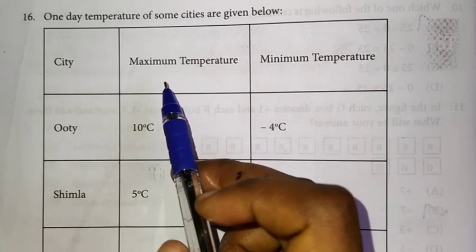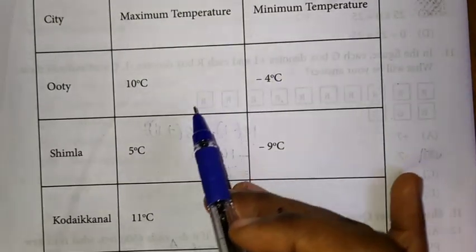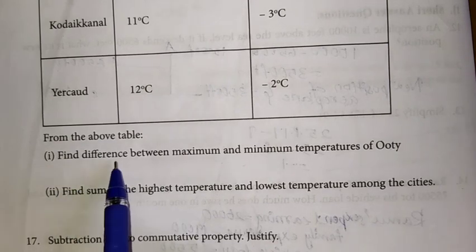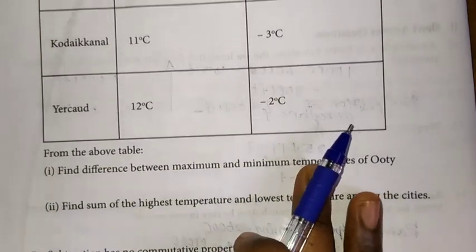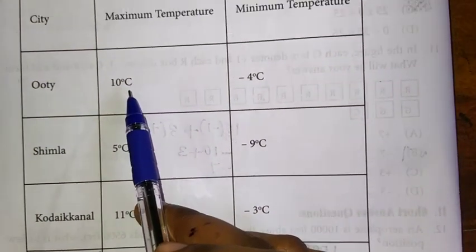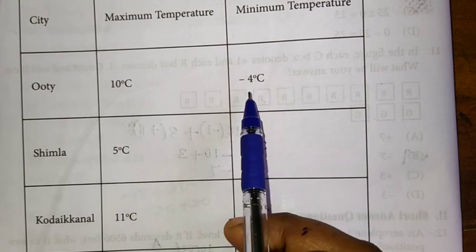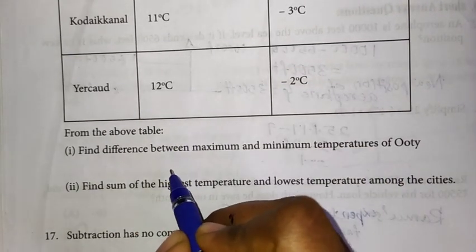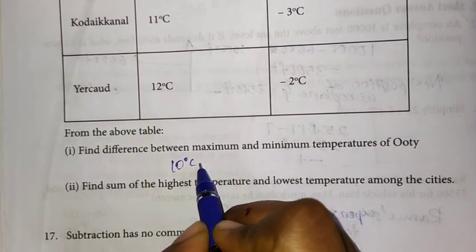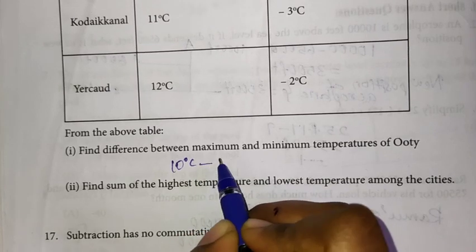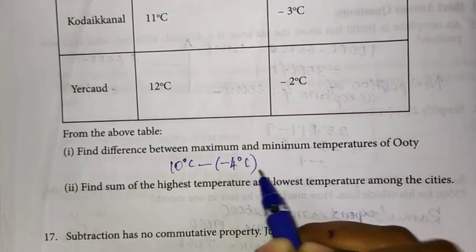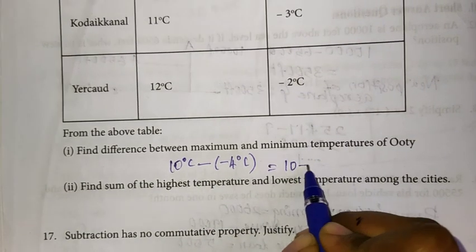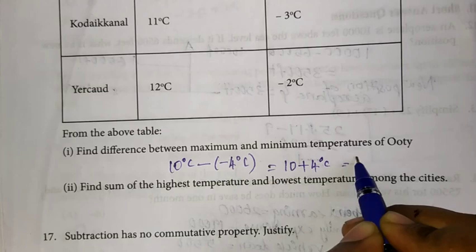Sixteenth question: one day temperatures of some cities are given. First, find the difference between the maximum and minimum temperature. Maximum temperature is 10°C and minimum is minus 4°C. Difference: 10 minus of minus 4; minus into minus gives plus, so 10 plus 4 equals 14°C.